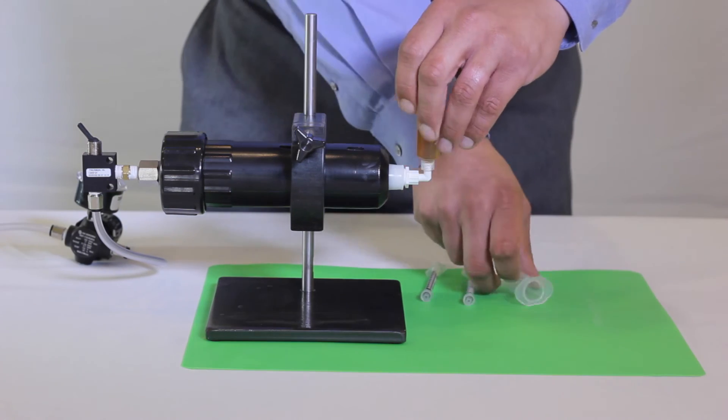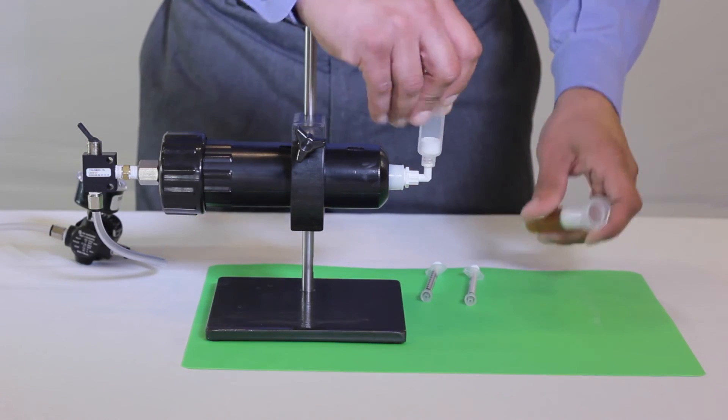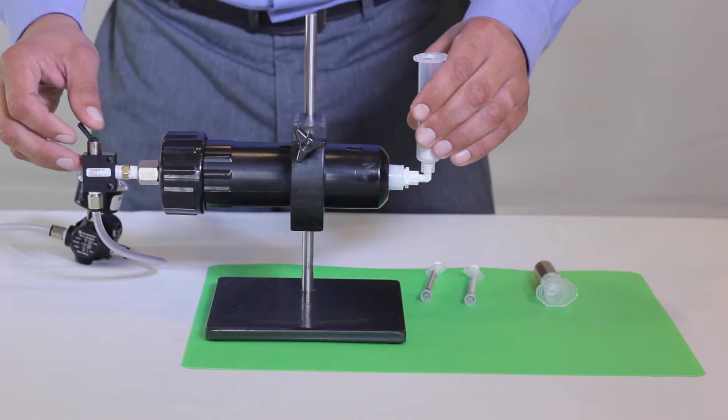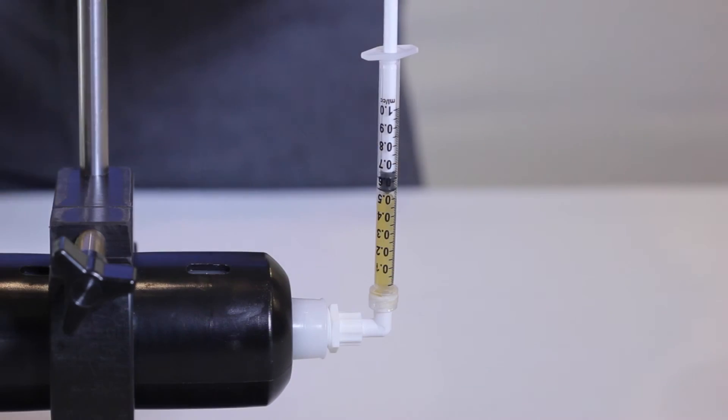Fill to approximately ¾ capacity and toggle off. You can then simply remove the filled syringe and replace it with an empty one and continue filling.